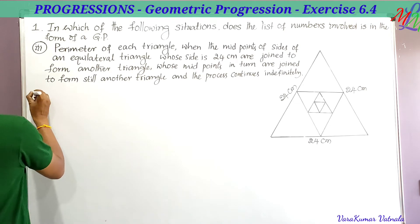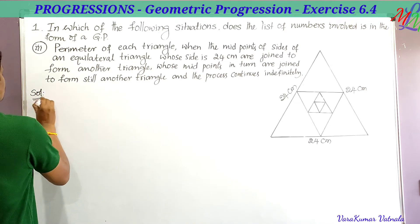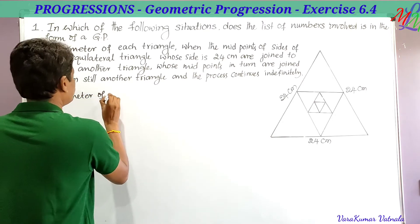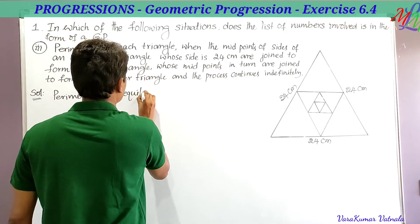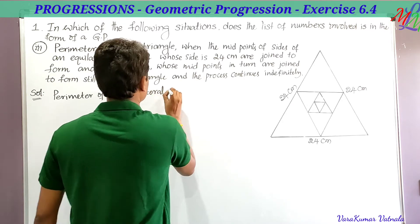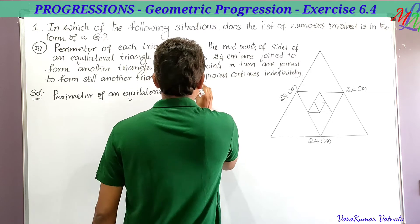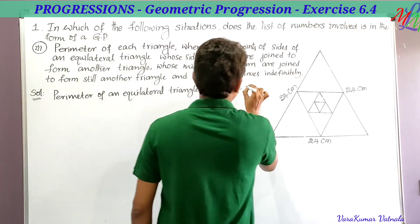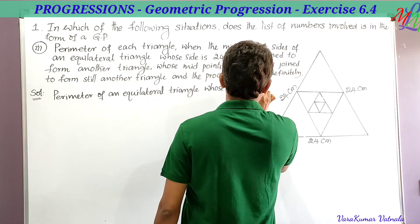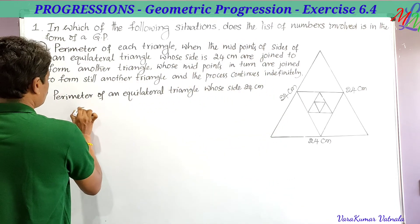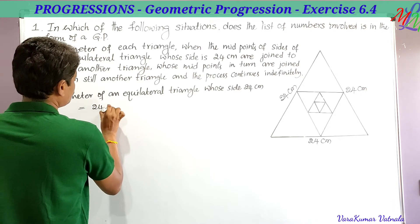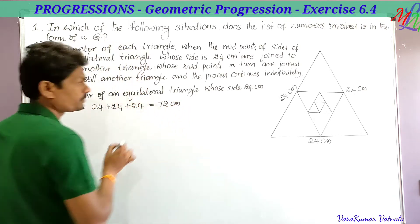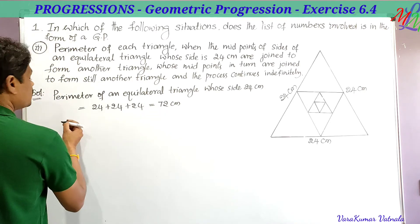We need to find the perimeter of each triangle. The perimeter of the first equilateral triangle whose side is 24 cm is 24 + 24 + 24 = 72 centimeters.